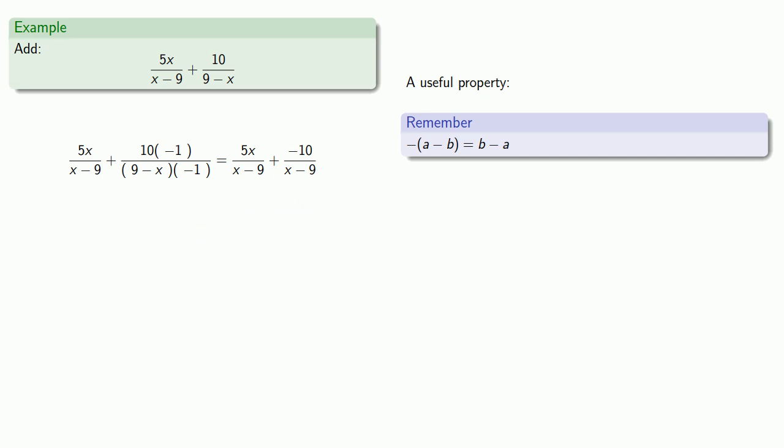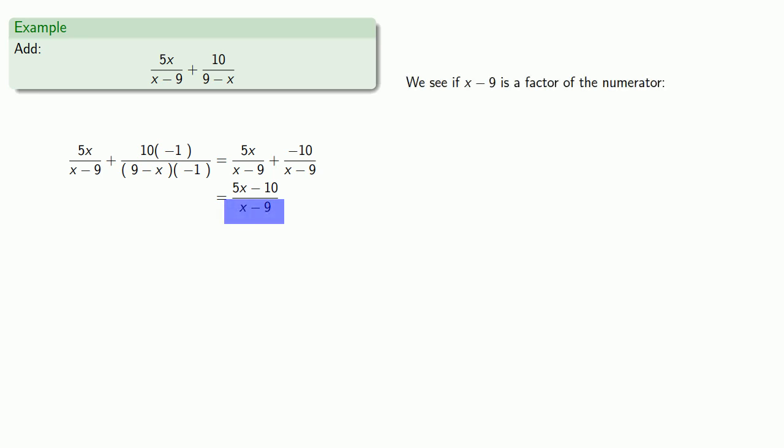So we can add the numerators. We'll try to simplify. We'll see if x minus 9 is a factor of the numerator. Can we write 5x minus 10 as x minus 9 times something?